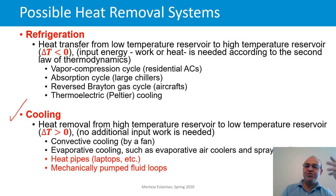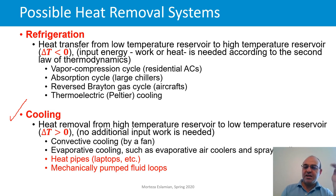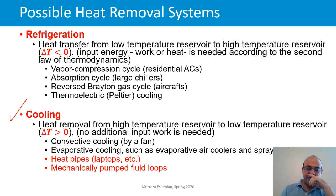The question is how to promote this natural process so that components do not get overheated. Some known methods include convective cooling by a fan — like cooling the CPU of a computer, laptops, or data centers — which simply uses a fan to improve the convection process, and evaporative cooling such as evaporative air coolers and spray generators.